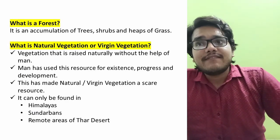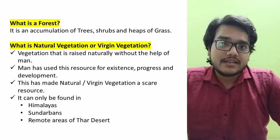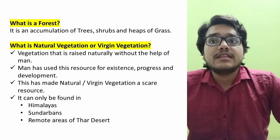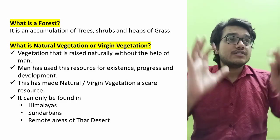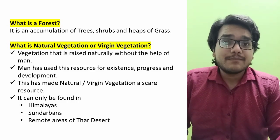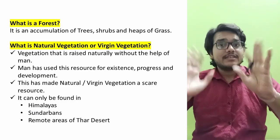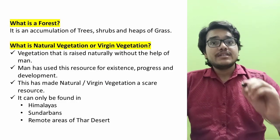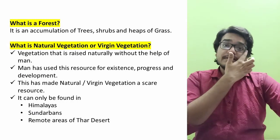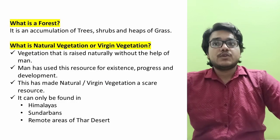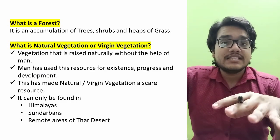Now we come to natural vegetation. Only that vegetation is included which can be raised naturally without the help of man. Natural vegetation grows without any human hand. Things like agriculture fields, orchards, fruits, and vegetables are grown by humans with purpose and intention. Virgin vegetation is untouched vegetation — that is why it is also called virgin vegetation. This vegetation exists in areas where humans have not gone or are not interested in going.